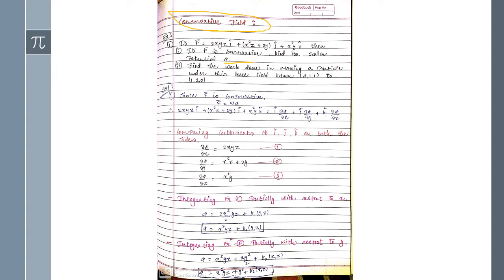Now, if F̄ is conservative, the condition for a conservative field is that it must satisfy F̄ equals ∇φ. So since F̄ is already given, we can apply F̄ equals del φ. We write it as the gradient multiplied by φ.